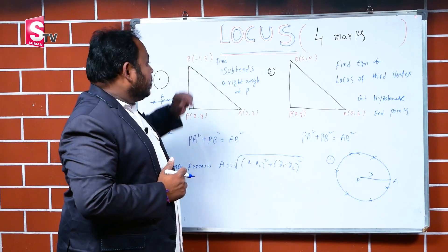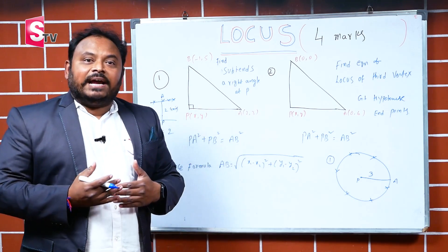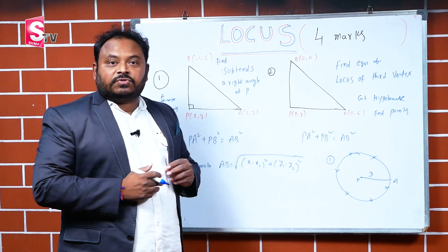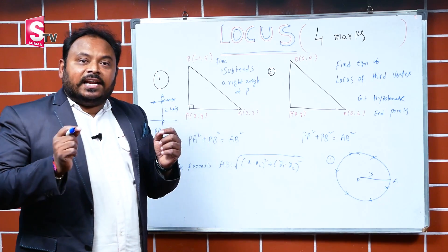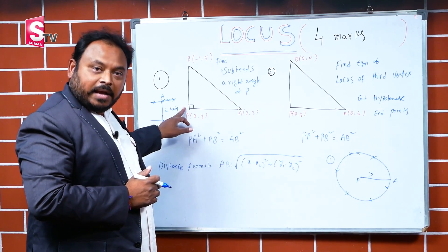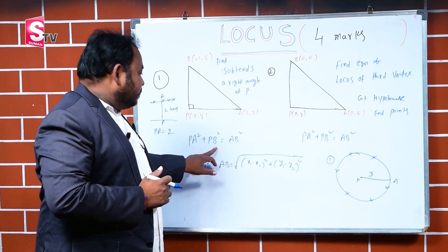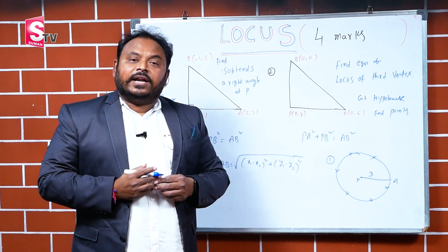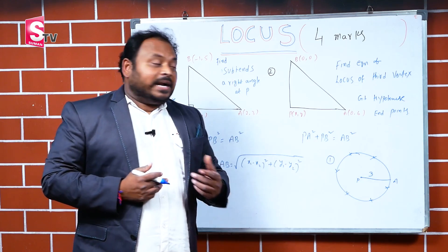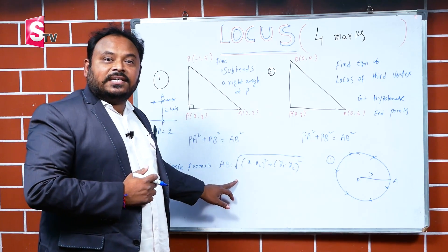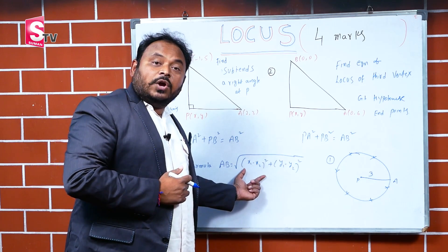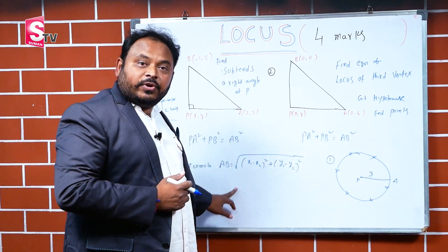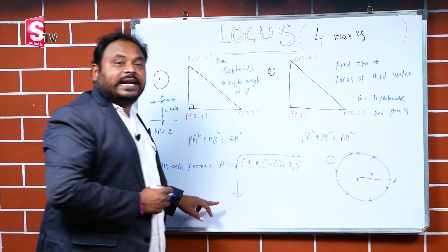They are saying about the three angles, that is why I draw the triangle. The condition is PA² + PB² = AB², because this is a right angle triangle — one angle must be 90 degrees at P. Therefore, the condition is PA² + PB² = AB². We use the distance formula: under root of (x₁ - x₂)² + (y₁ - y₂)². Substitute these values and apply the formula (A - B)² = A² + B² - 2AB. Solving this, you can get the answer.